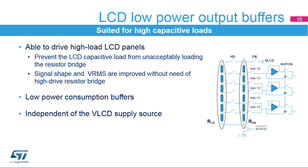These buffers are power consumption optimized. Their consumption is negligible during static phases, whereas they are very reactive to provide necessary current required by the LCD load during transitions. To further reduce power consumption, when buffers are enabled, intermediate voltages are generated by RHN. RLN is automatically disabled regardless of the HD bit or PON bits configuration. Output buffers can be used regardless of the selected LCD supply source, internal or external.